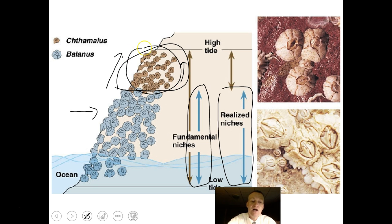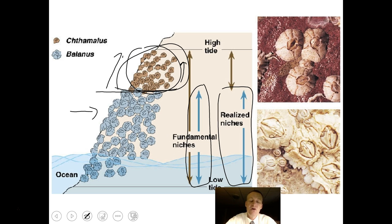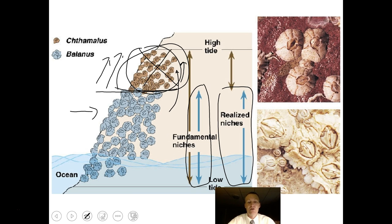When you study all the different species in the world and see where they're competing, the principles of fundamental and realized niche take effect so that they basically don't compete to the point where they can't live at all. It appears the brown barnacle has been forced to move. If the blue barnacle evolves the ability to live higher up and the brown barnacle can't compete, it might go extinct altogether.